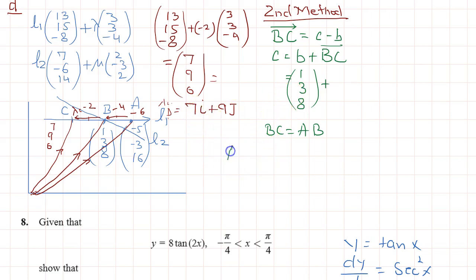So we have to calculate AB. To calculate AB, that is B minus A. So B is (1, 3, 8) minus A is (-5, -3, 16). So that will be equal to 1 plus 5 is 6, 3 plus 3 is 6, and 8 minus 16 is -8. So that is AB. And AB is equal to BC. So this is the vector BC.